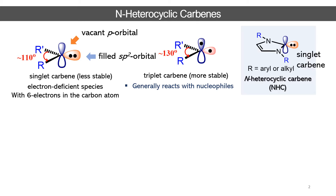N-heterocyclic carbene is a type of singlet carbene having a bent structure and a cyclic nature. This cyclic molecule has a nitrogen or any other heteroatom embedded in the adjacent position to the carbene carbon, which stabilizes this particular carbene. The N-substituents are also important and may be alkyl or aryl groups.